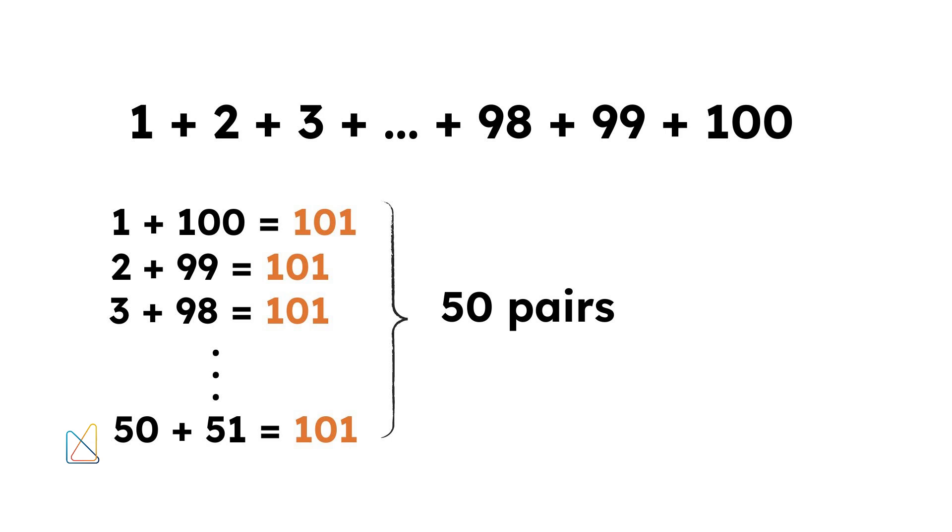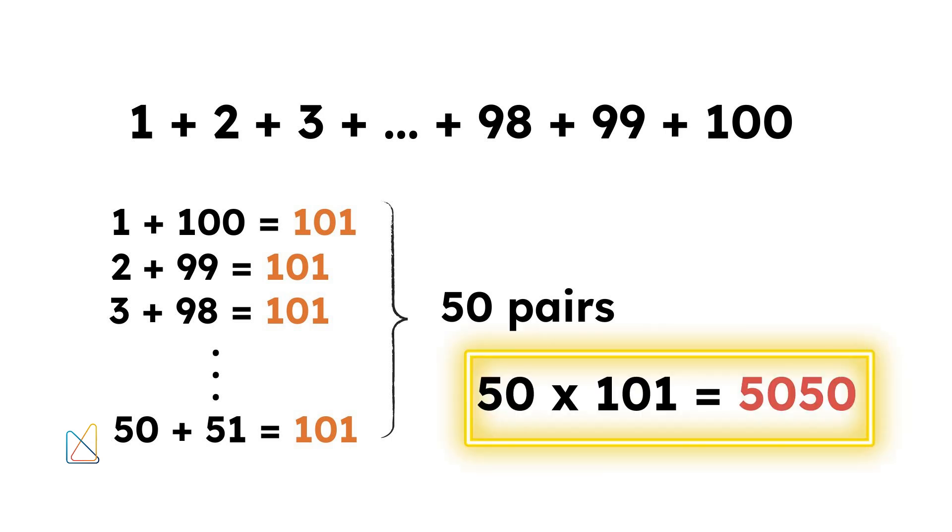Gauss realized that he could form 50 such pairs, each summing to 101. So, to find the total sum, he simply multiplied the number of pairs, which is 50, by the sum of each pair, 101.